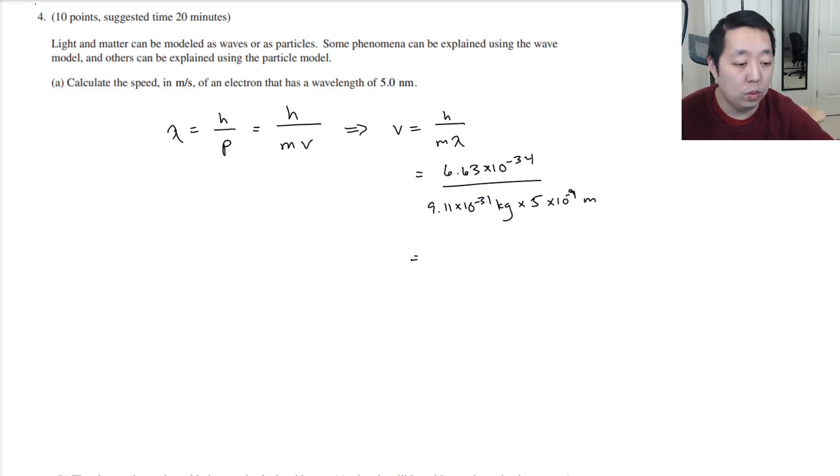So what are we going to get when we do this? 6.63e minus 34 divided by 9.11e negative 31. I got 1.46 times 10 to the 5th meters per second.